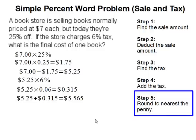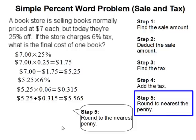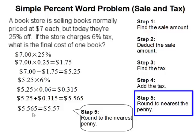Step five: round to the nearest penny. When we purchase items from the store, the store is always going to round your price to the nearest penny. So $5.565 will get rounded off to $5.57.